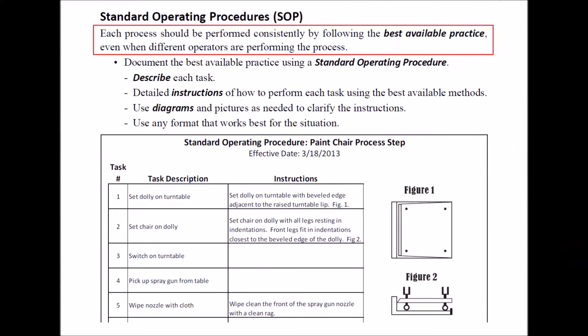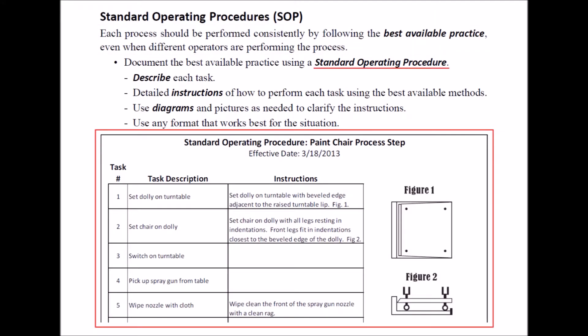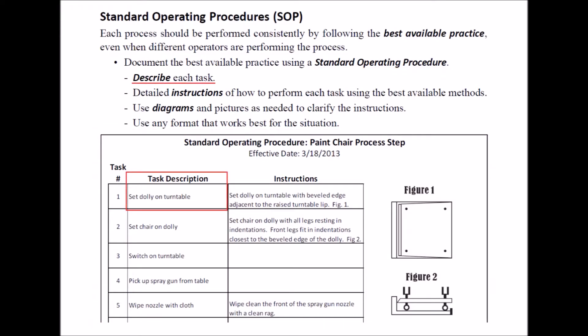Each process should be performed consistently by following the best available practice, even when different operators are performing the process. To do this, determine what the best available practice is and document it using a standard operating procedure, also known as an SOP. In an SOP, you list and describe each task and give detailed instructions of how to perform each task using the best available methods.